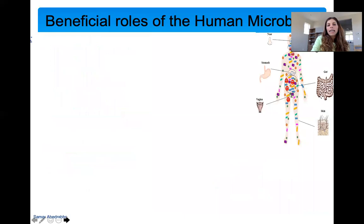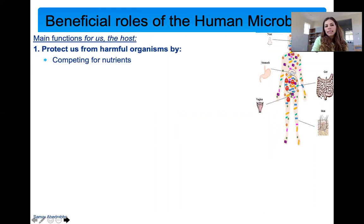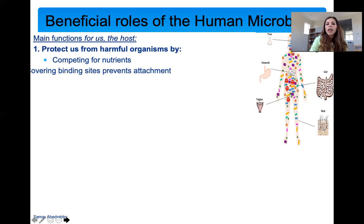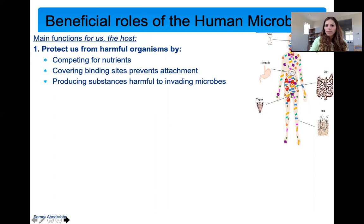The microbiome has a lot of beneficial roles for us. One of the main roles is it protects us from harmful organisms. The good bacteria compete for nutrients with pathogens — so if you have a lot of good bacteria and pathogens come in, there's no nutrients for them, so they won't grow. The good bacteria also cover binding sites so that pathogens have nowhere to stick, and your good microbiota provides antimicrobial substances that will kill potential pathogens.